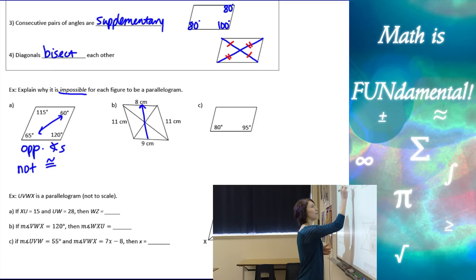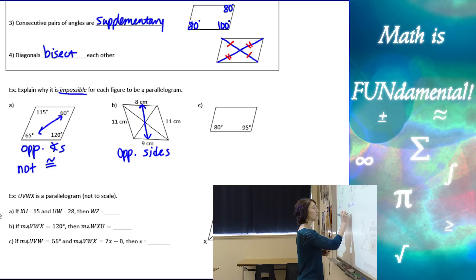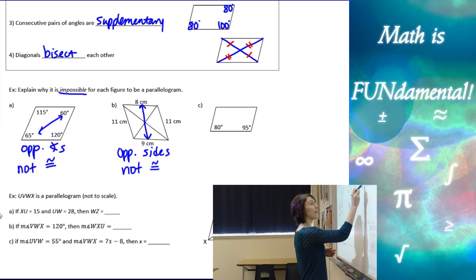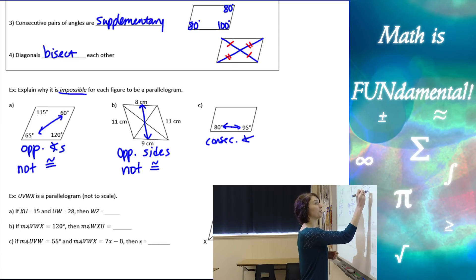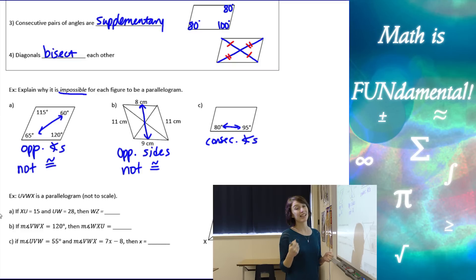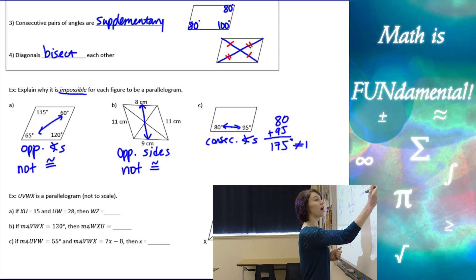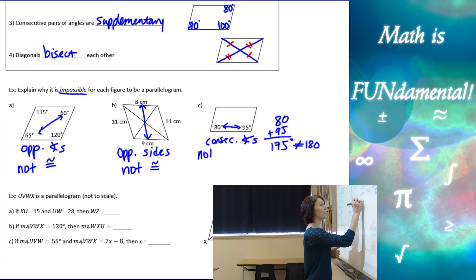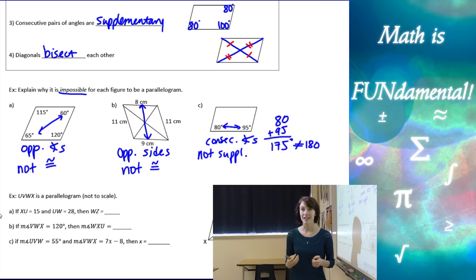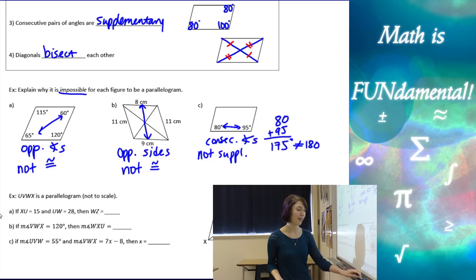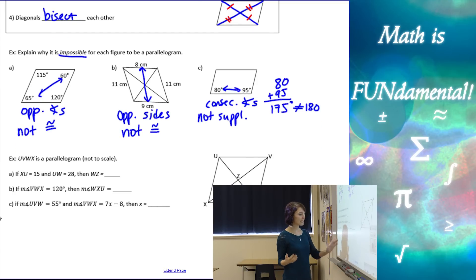The next figure: the opposite sides are supposed to be congruent, but these ones aren't — so not congruent is why it's impossible. The third figure has two consecutive angles; consecutive angles have to be supplementary. If I add 80 plus 95, I get 175 degrees, which is not 180. So consecutive angles are not supplementary in this figure, meaning it's not a parallelogram.